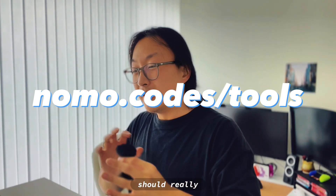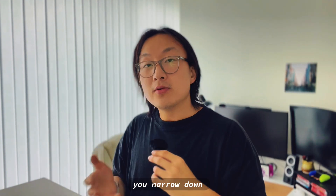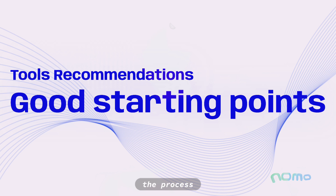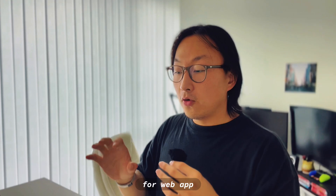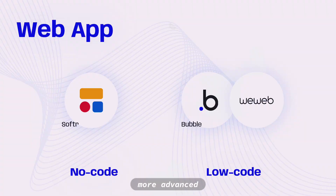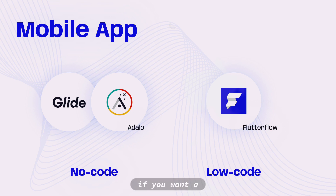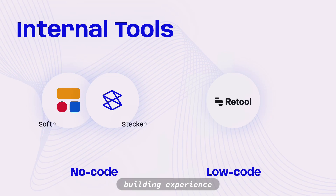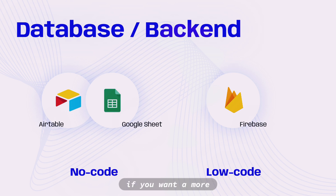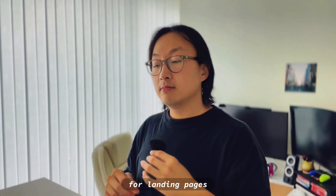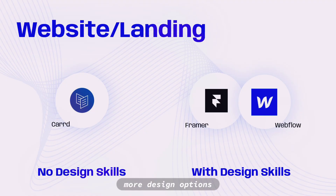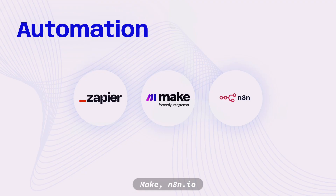While picking a tool should really depend on your problem space, here are some recommended starting points. For web app, for an easier building experience go with Softer; if you want more advanced, customized, powerful apps, go with Bubble or WeWeb. For mobile app, go with Adalo or Glide; if you want a steeper learning curve but a more powerful one, go with Flutterflow. For internal tools, go with Softer and Stacker; for a more powerful one, go with Retool. For database, go with Airtable and Google Sheet; for a more advanced option, go with Firebase. For landing pages, go with Card if you want to build really fast; but if you want more design options and customization at a steeper learning curve, go with Framer and Webflow. For automation, go with Zapier, Make, or n8n.io.